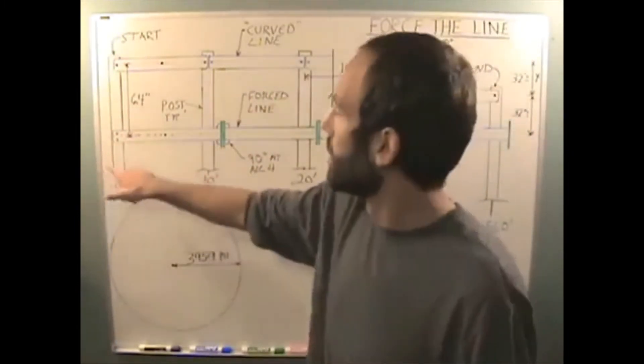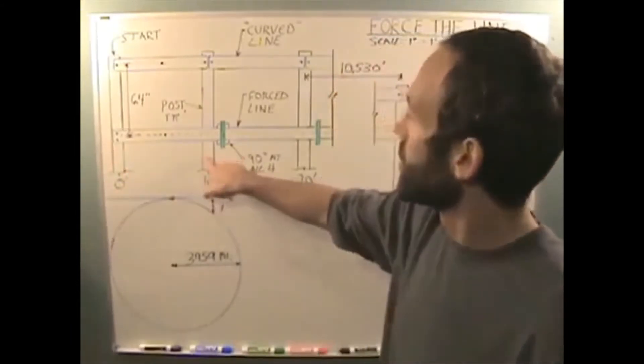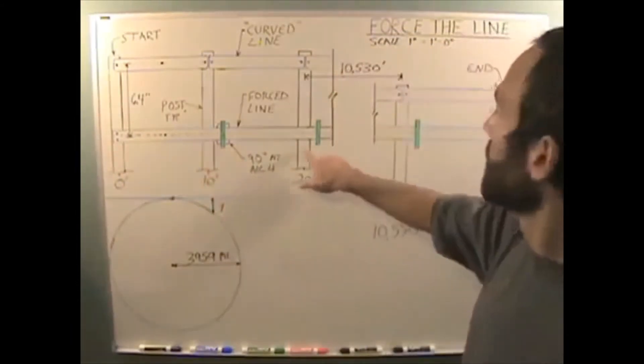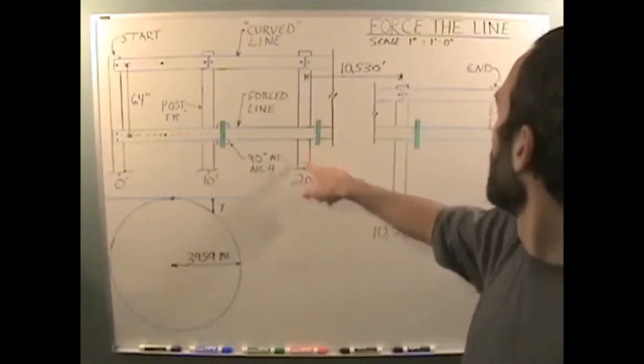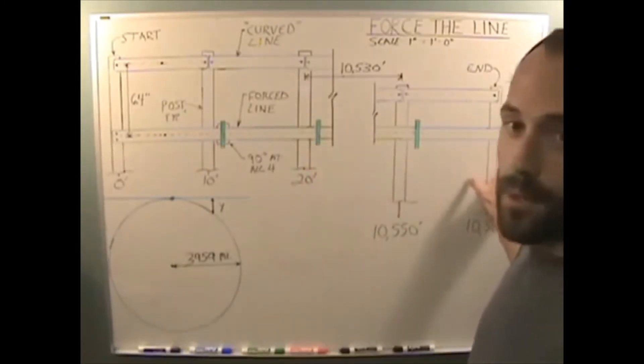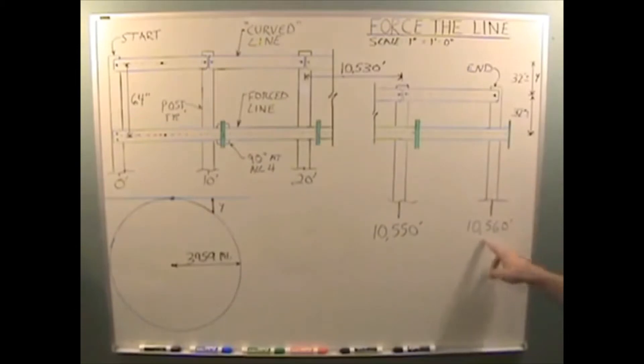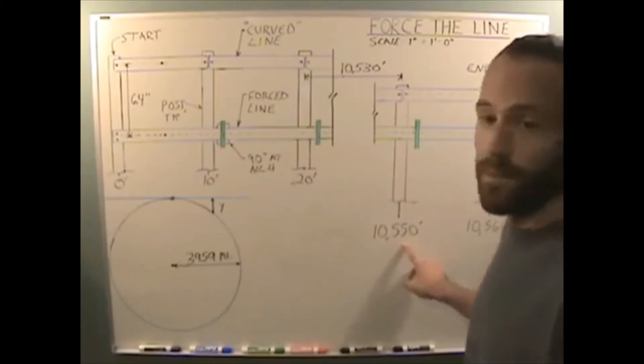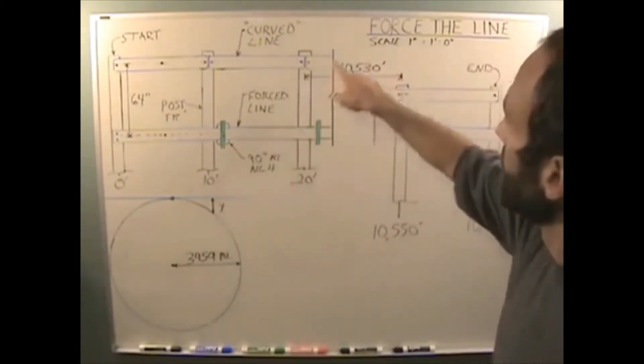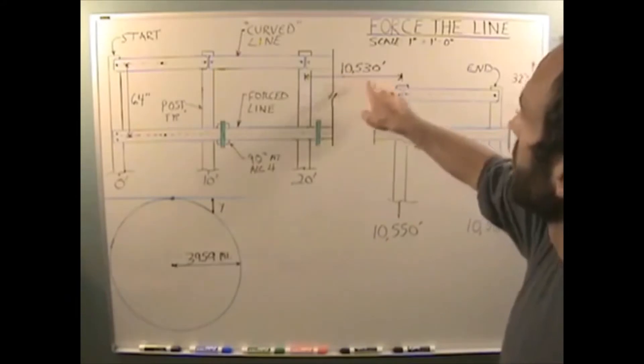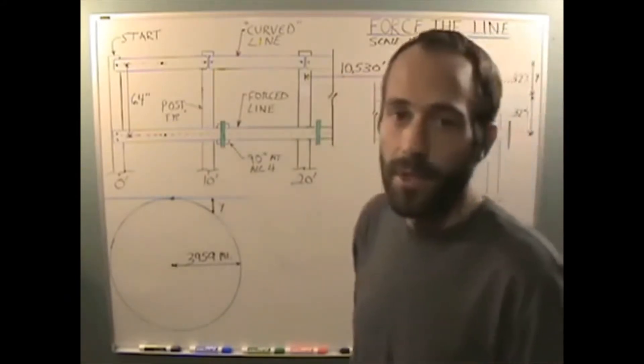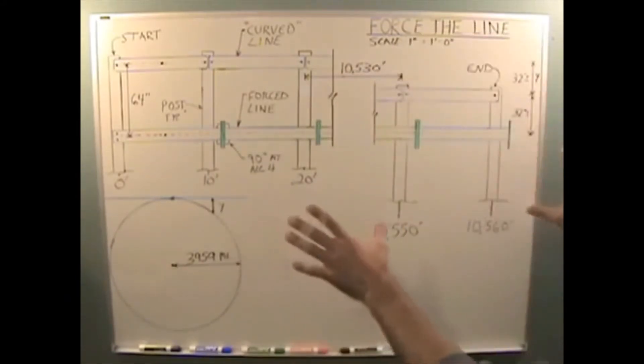Ten feet on center. Here's your first post, second post at ten feet, third post at twenty feet, all the way down to two miles away. Here's your last post at ten thousand five hundred and sixty feet or two miles and your second to last post at ten thousand five hundred and fifty feet. I've got my brake line in here to show that the distance between these two posts is ten thousand five hundred and thirty feet. You see what I've drawn here.